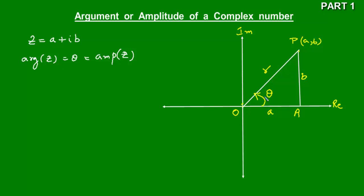If theta is the value of the argument, we can say 2n*pi plus theta are also values of this argument, where n belongs to the set of integers. So whenever theta is the argument we have infinitely many values of this argument, but we cannot call each one of them the required argument — what we want is a principal argument.